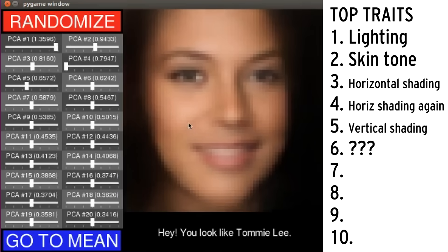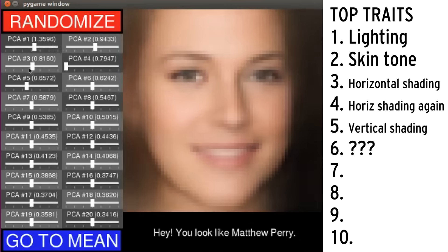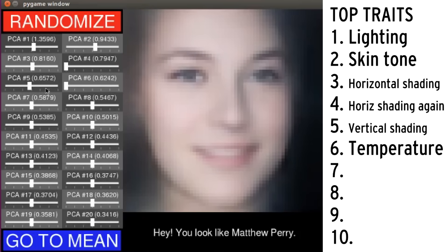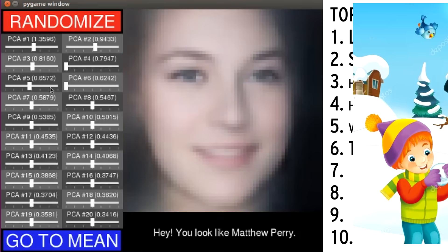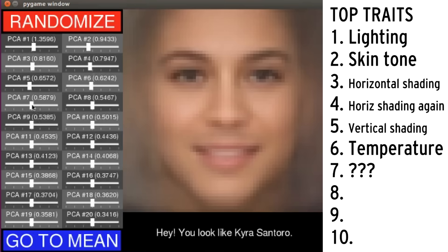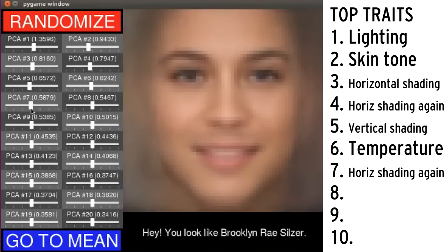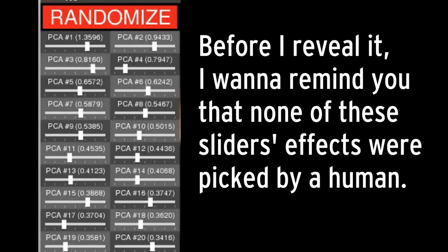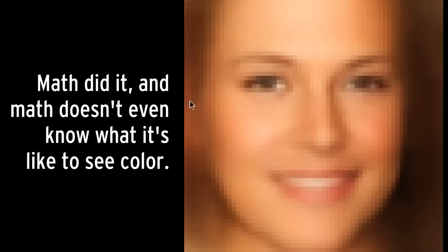PCA 6. I know what this one is, because it's one of my favorites to toy around with when I'm messing with celebrity images. It's the temperature of the image. If we want this person to seem warmer, let's just heat her up — and let's make her colder now. So we're going from red, redder images which feel cozier, to blue images which feel icier. I also noticed that as you get colder, the eyebrows move up, which might say something about being in a colder location and your eyes opening wider. Before I reveal PCA 8, I want to remind you that none of these sliders' effects were picked by a human — they were merely a mathematical consequence of the dataset. That's why the fact that PC6 pinpoints just color correction is so surprising to me. Math did it, and math doesn't even know what it's like to see color.